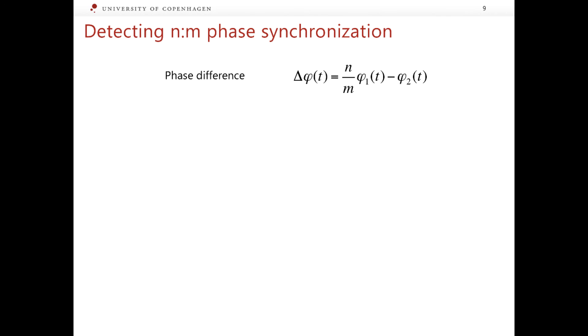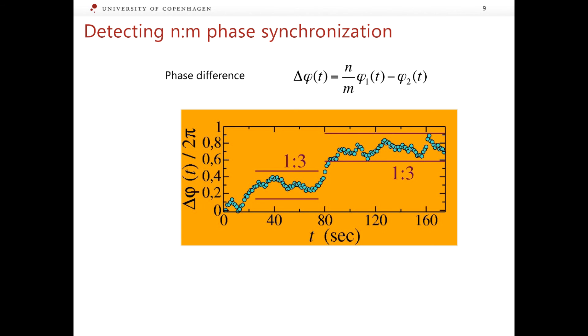An example of the phase difference between the human electrocardiogram and the breathing process is shown in this picture. Here we suspect that the phase synchronization of the order 1 to 3 is taking place and we wish to find out if this is true or not. We can see two plateaus of phase difference which suggest the presence of a 1 to 3 synchronization. The thickness of each plateau is definitely less than 0.5. Therefore, we can state that during the observation time of 180 seconds there are two episodes of 1 to 3 synchronization between the heartbeats and breathing.